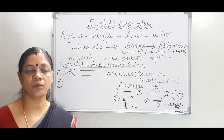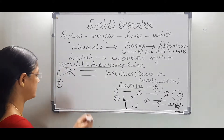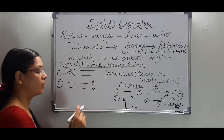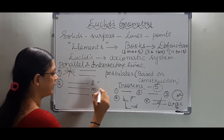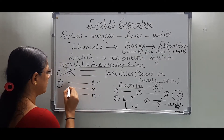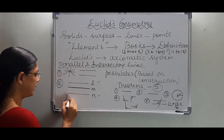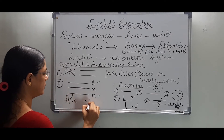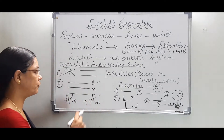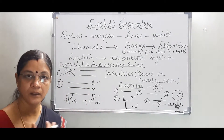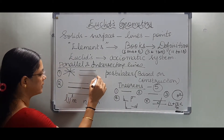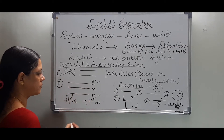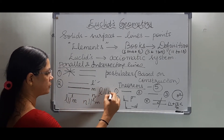He went on to explain about parallel lines. If two lines L and N are both parallel to a given line M — so L is parallel to M and N is also parallel to M — then we say that L and N are parallel to each other. That is, if L ∥ M and N ∥ M, then L ∥ N.